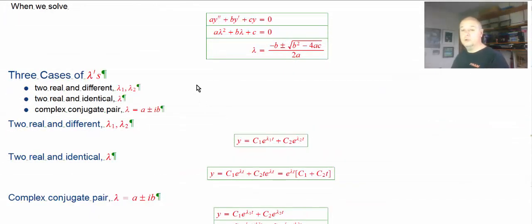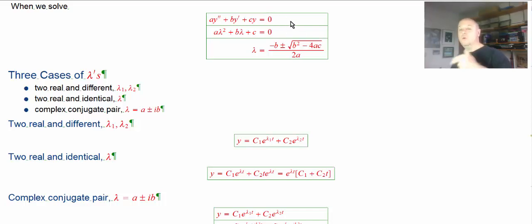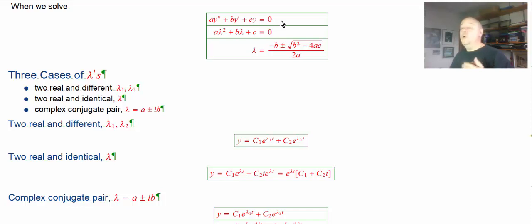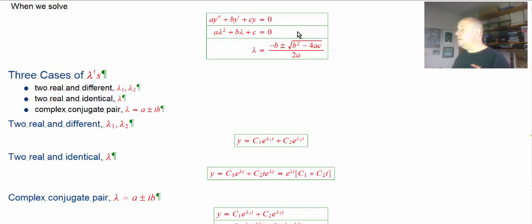We're solving linear second-order constant coefficient differential equations — homogeneous, because they're equal to zero. They're all of the form A y'' + B y' + C y = 0, for some numbers A, B, and C. We know what to do: we get our auxiliary equation, solve for the roots — the eigenvalues, the lambdas. We can either factor the auxiliary equation or use the quadratic formula to get the lambdas.